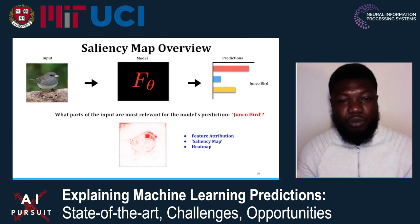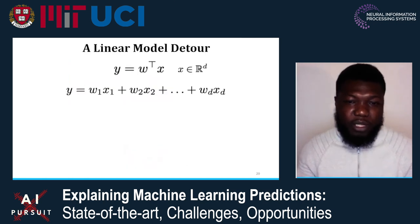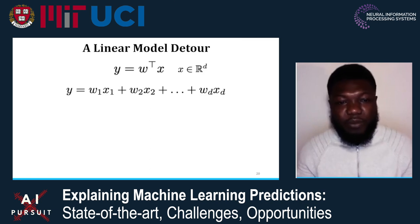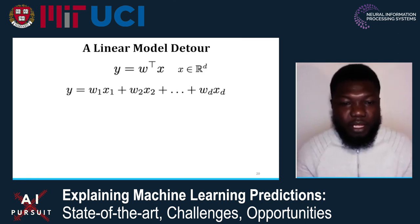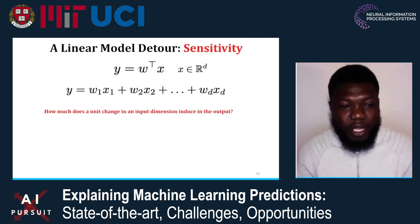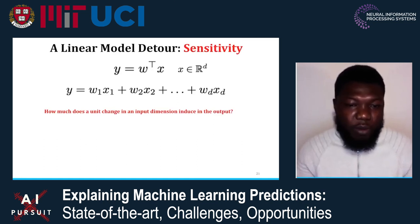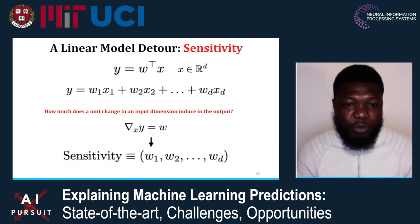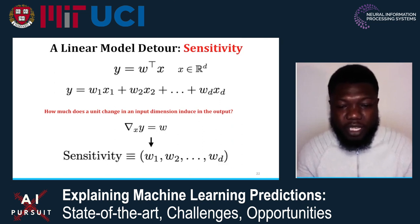In the rest of this tutorial, we'll call these methods saliency map techniques. Before discussing them, let's take a quick look at linear models, because linear models are very instructive and can give us insights that translate to the deep neural network setting. Say we have a model W-transpose X with X in R^D dimensions. We can ask a question about sensitivity: how much does a unit change in an input dimension induce in the output? You can compute sensitivity as a gradient, which gives you essentially the weights of the model.